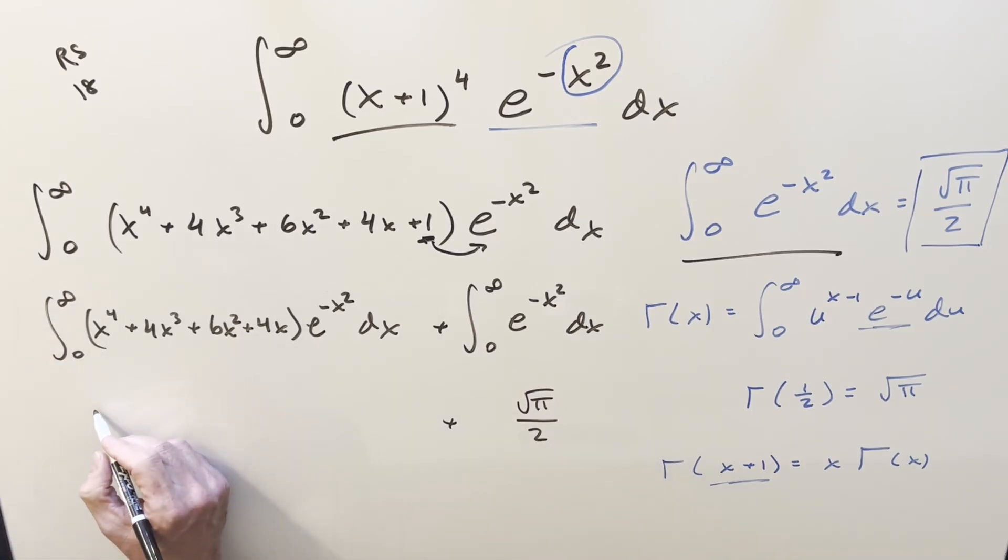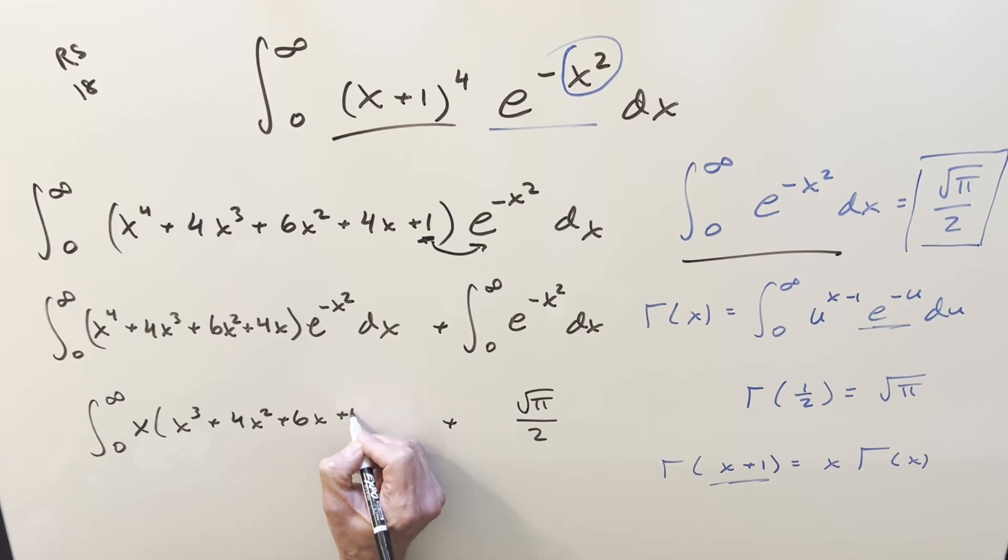Then on this integral, what I'm going to want to do, I actually want to factor an x out of all this. We'll see why in a second. So we're going from 0 to infinity, factor out an x. Then what we have is going to be x^3 + 4x^2 + 6x + 4.